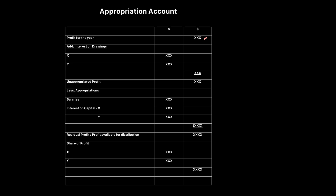Once we have our profit figure from the income statement, we start with the appropriation account. First, we add interest on drawings — partners are penalized for excessive drawings, so this interest increases profit. We call this figure the unappropriated profit: profit from operations plus interest on drawings earned by the business. Now to distribute this profit: first we allocate salaries to partners involved in management, paid from profits.